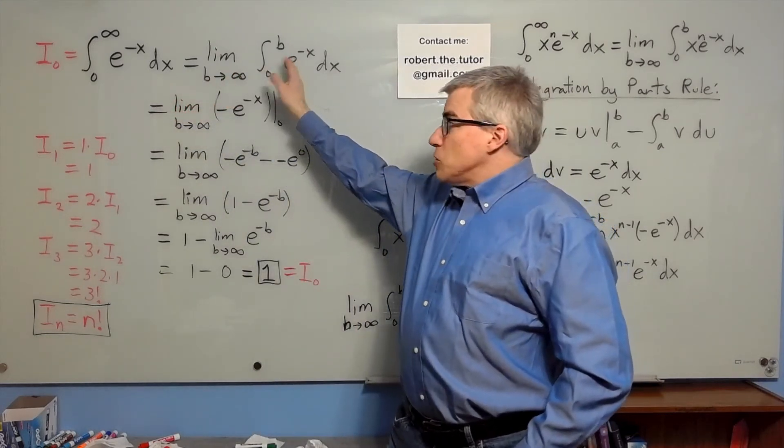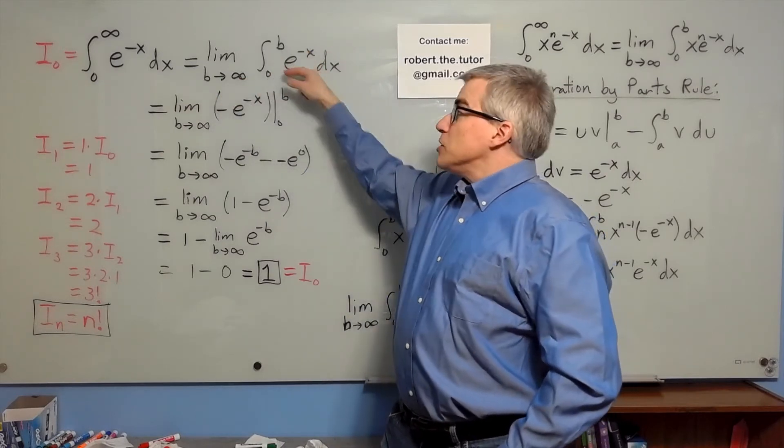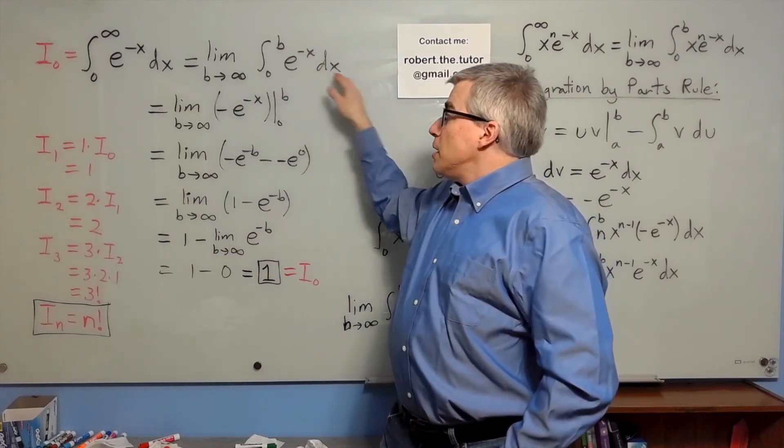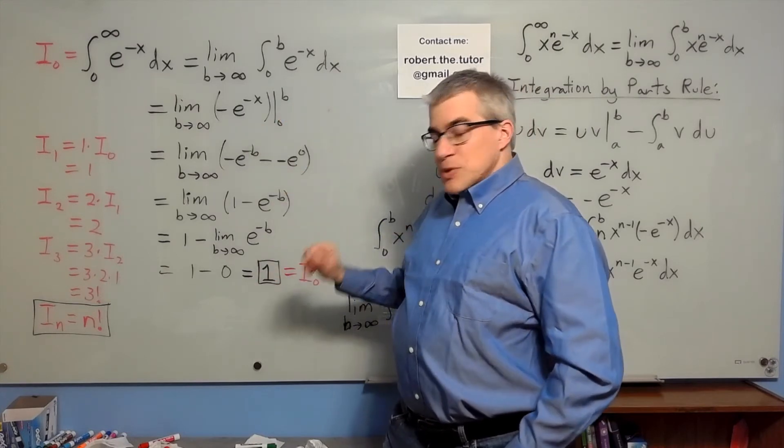Now the nitpicky way of doing that integral is you take the limit as b goes to infinity of a proper integral from zero to b. We can perform that integral, take the limit, and we get one. So integral zero is one.